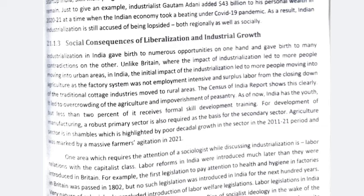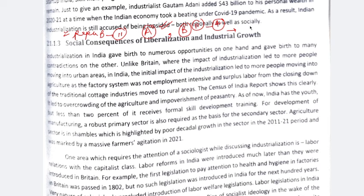Hi everyone, welcome to Karan Krant. We are going to continue our Paper B, Chapter number 11. We are covering Nitin Sangwan Essential Sociology. Paper A is covered completely and this playlist will be found on my channel. We are doing the 11th chapter, meaning we are only 4 chapters away. Let me tell you about State PAC and UPAC.